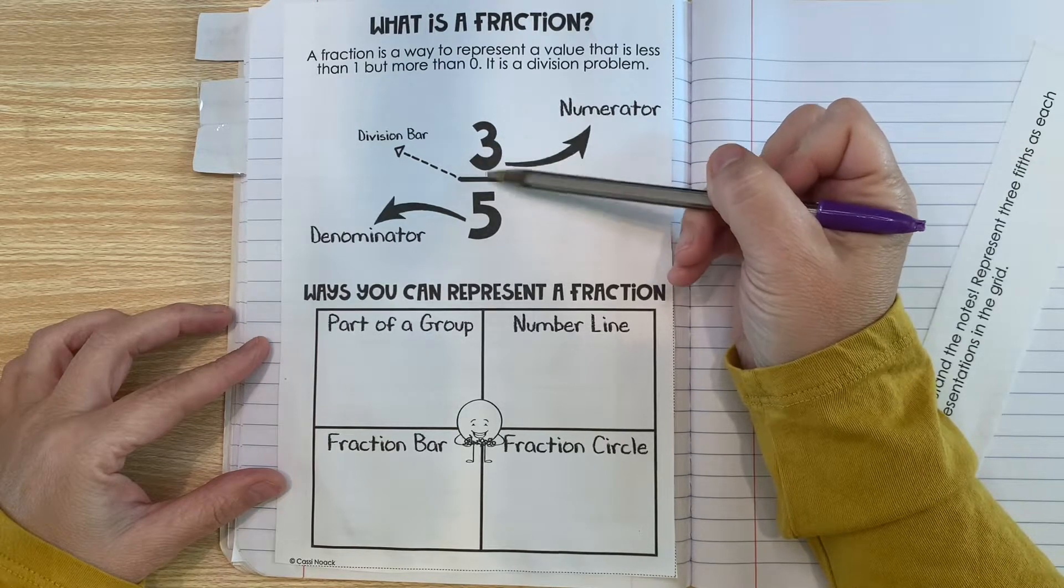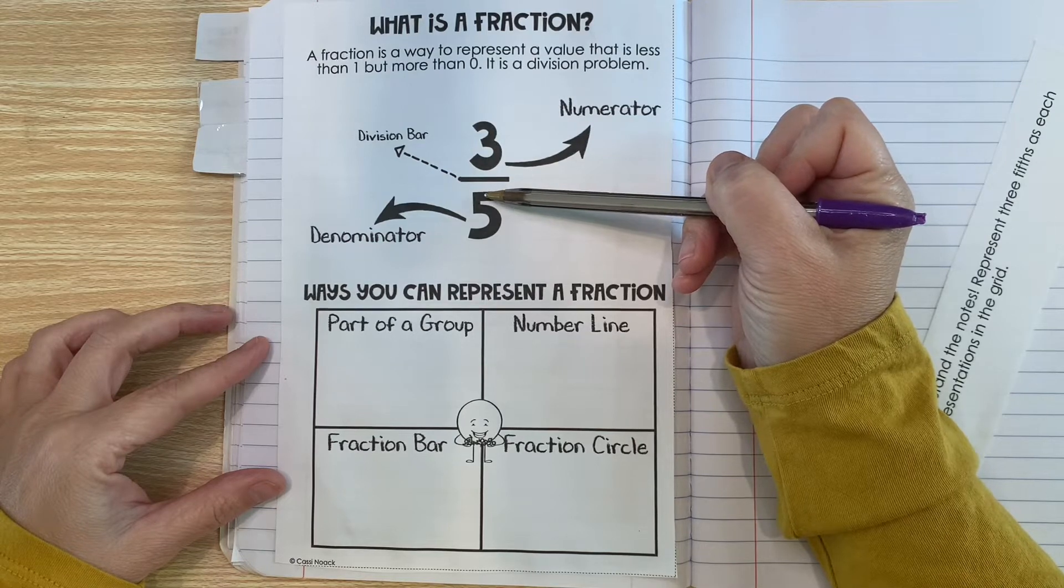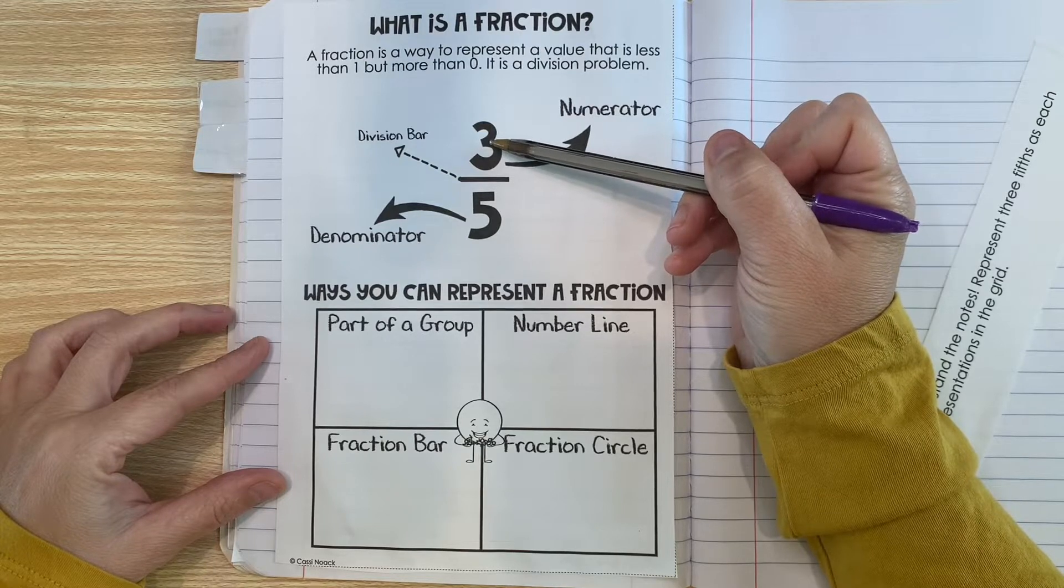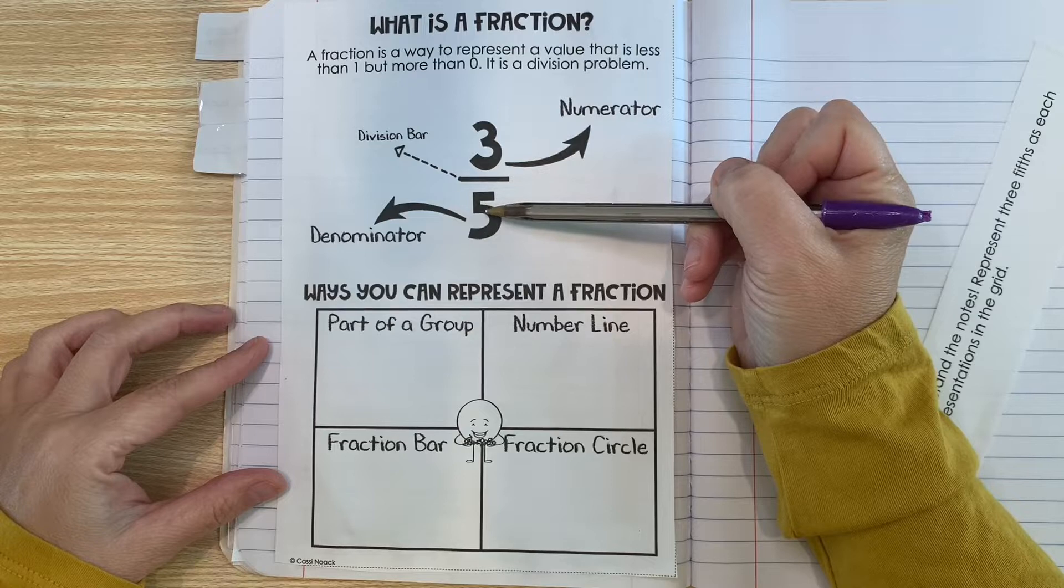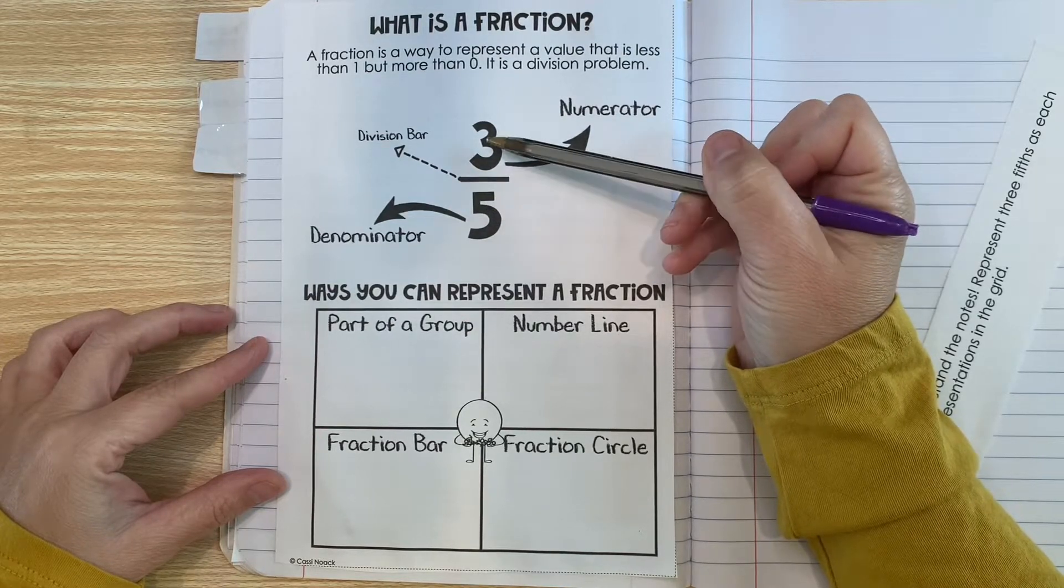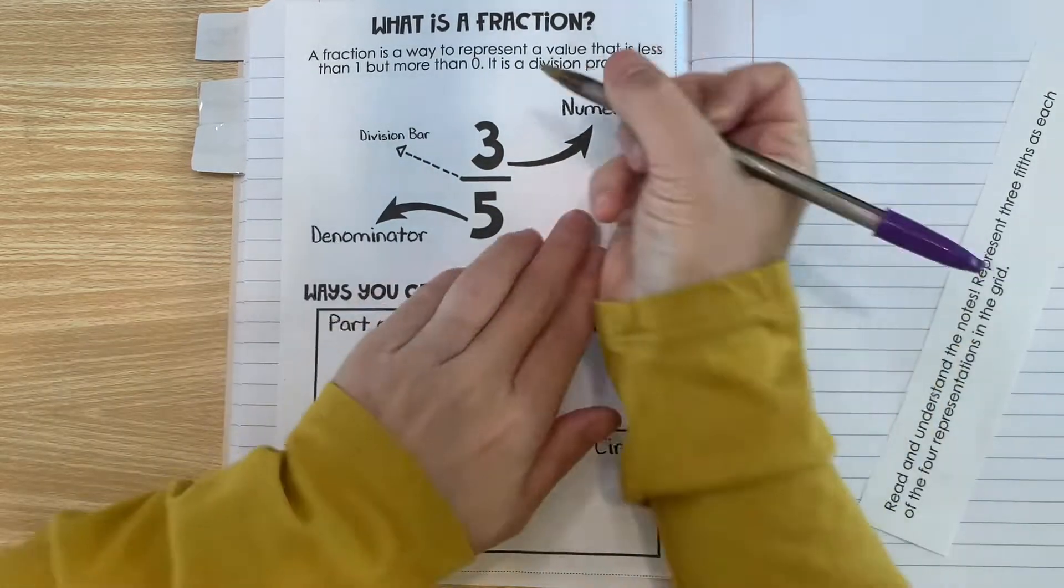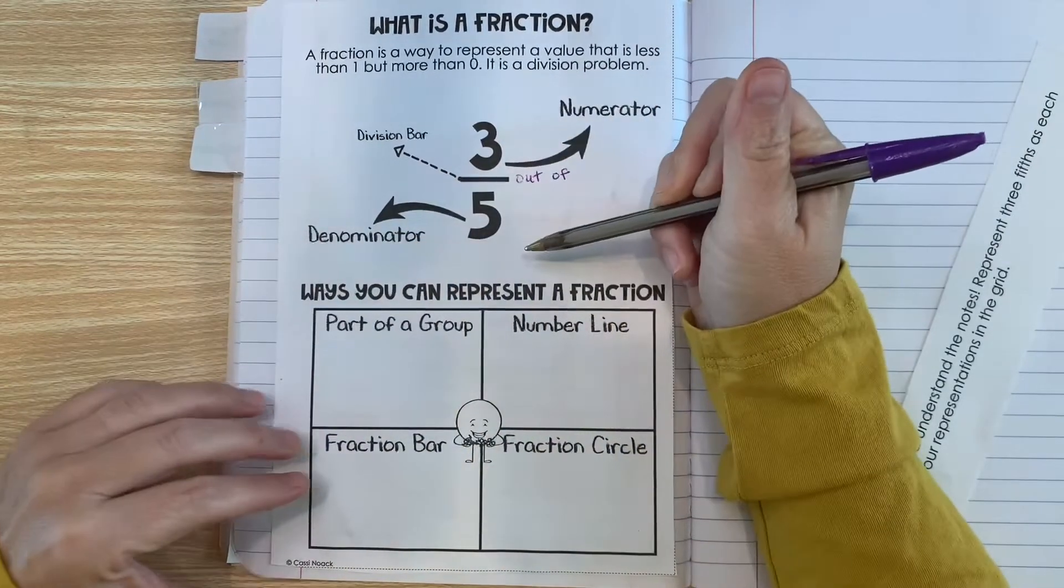So in three fifths, we have to think about something that is broken into five equal parts, and we're doing something with three of them. Maybe we're counting them, shading them, something that we're going to do with three out of those five parts. Now remember I said you could say three divided by five, but you can also say three out of five.